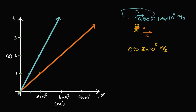In the last video, we started to construct a space-time diagram from my frame of reference. I'm just drifting through space, assuming that I'm in an inertial frame of reference, which means I'm moving at a constant velocity relative to all other frames of reference. We set up a situation where I emitted a photon right at time zero, so after one second it would have moved 3×10⁸ meters, and after two seconds it would have moved 6×10⁸ meters.